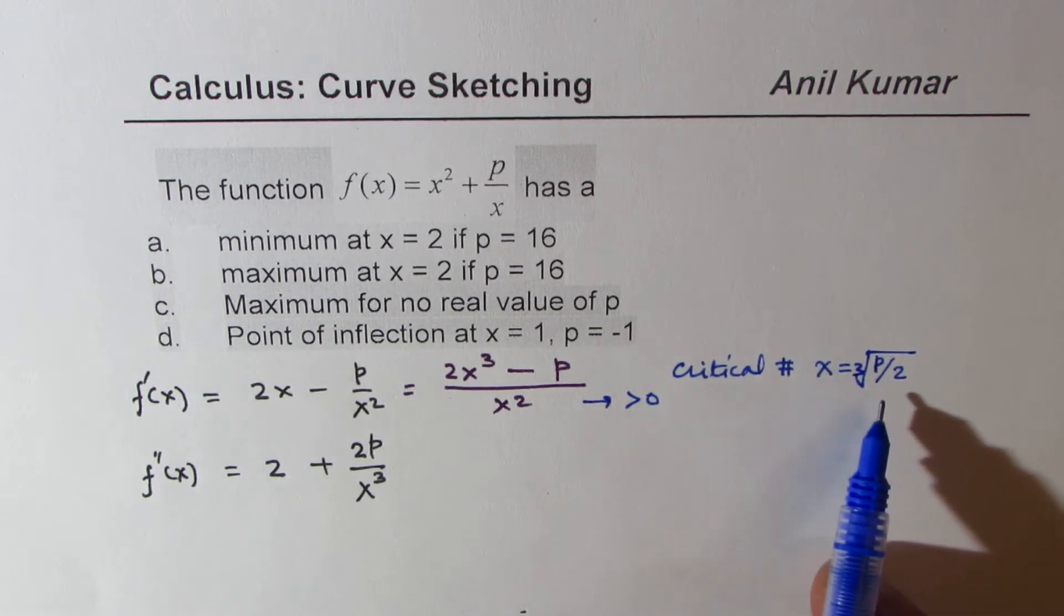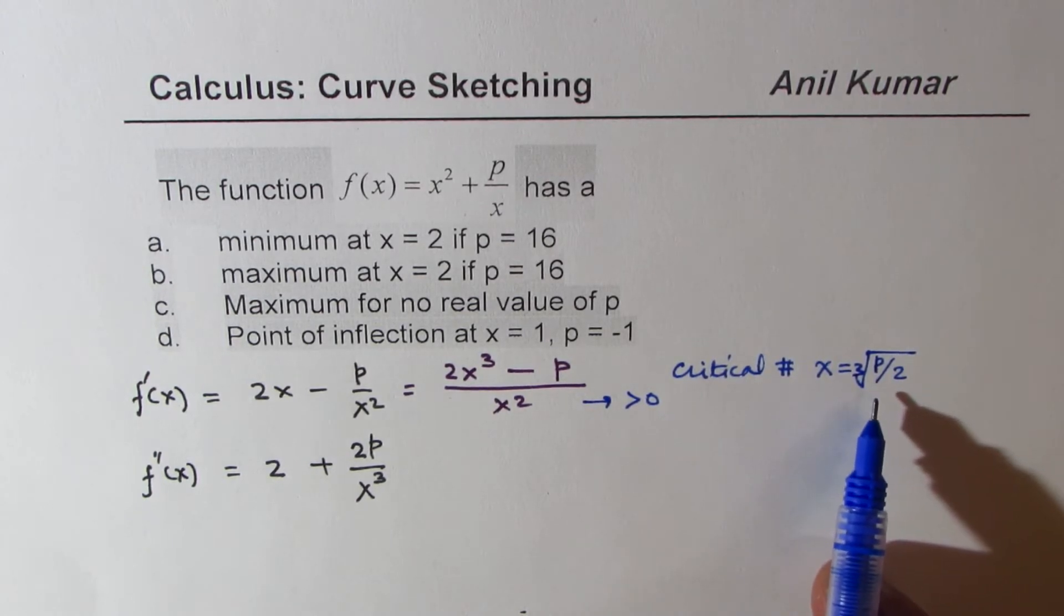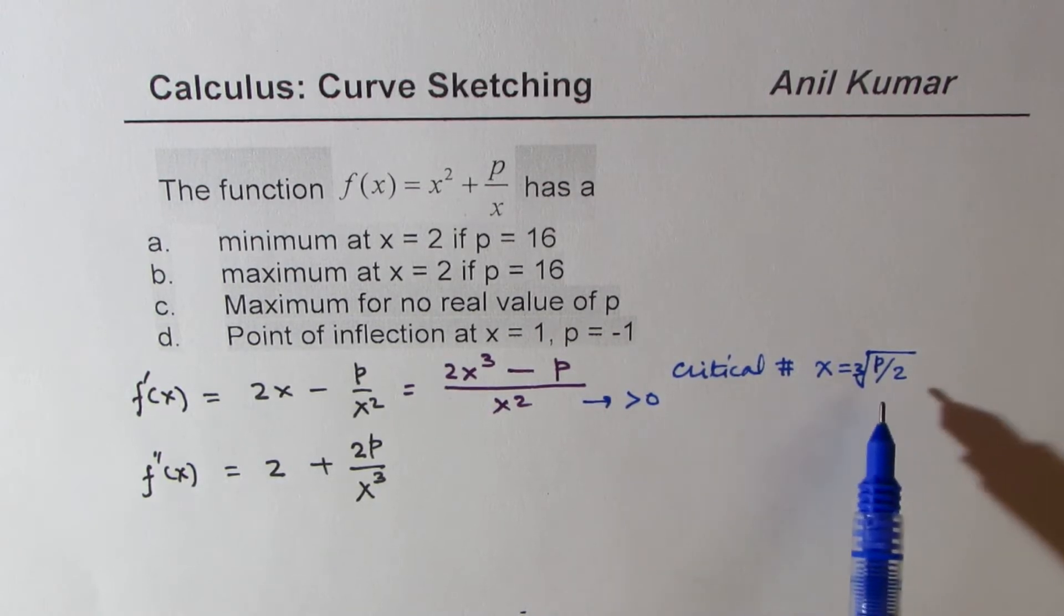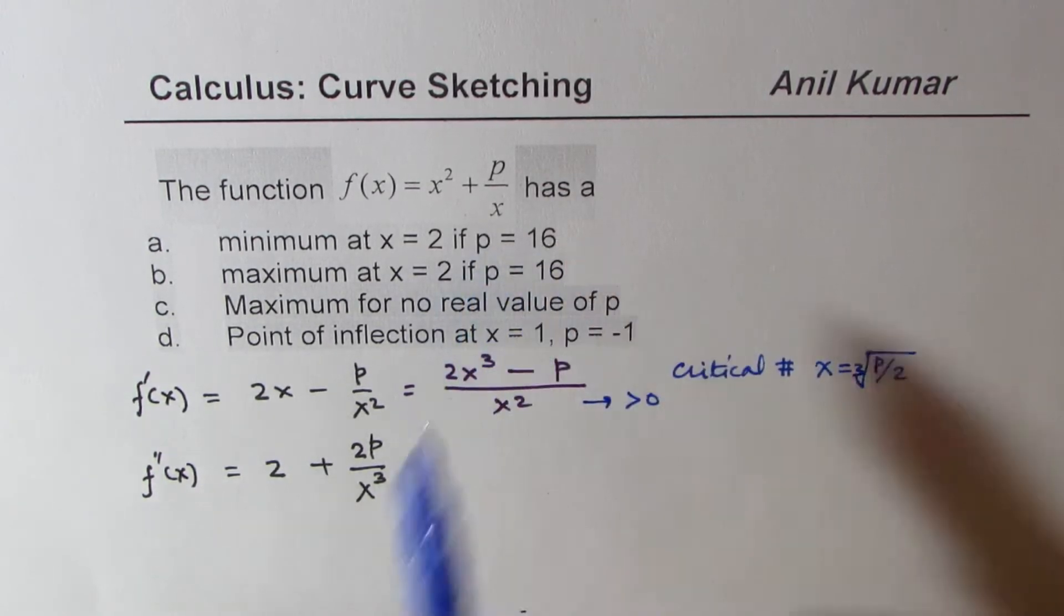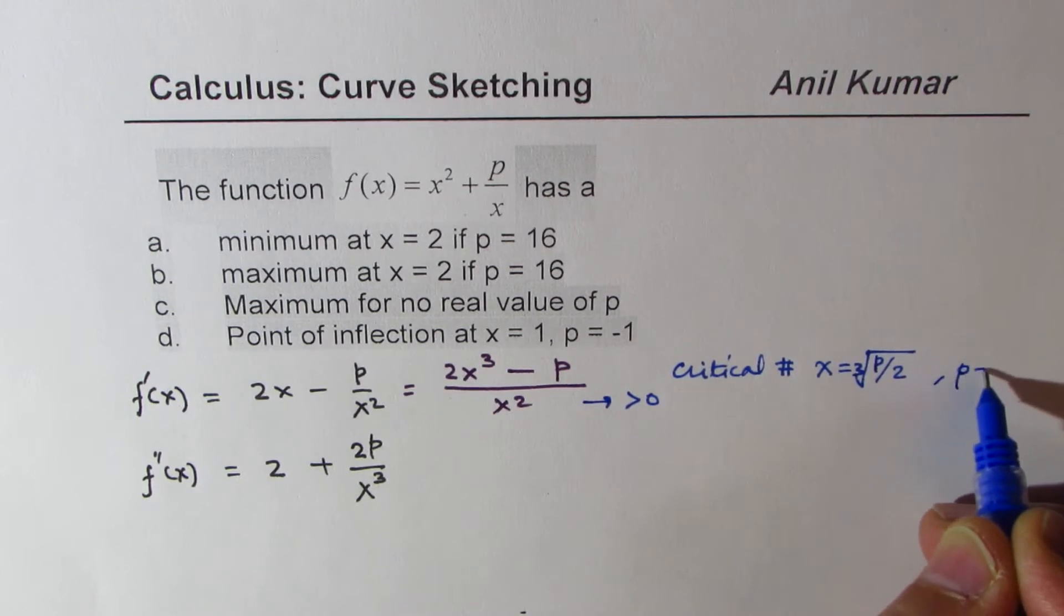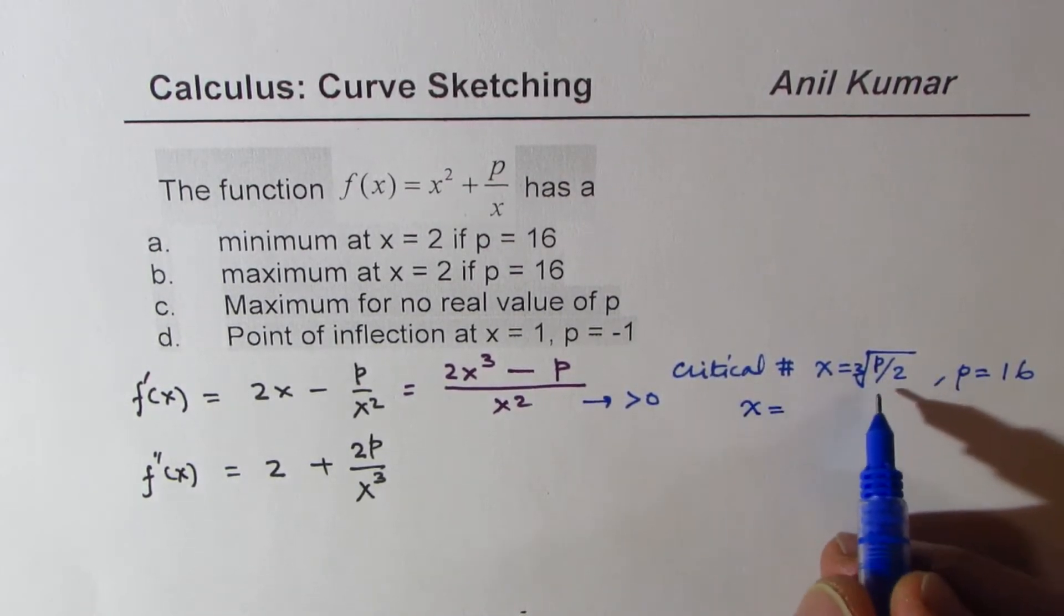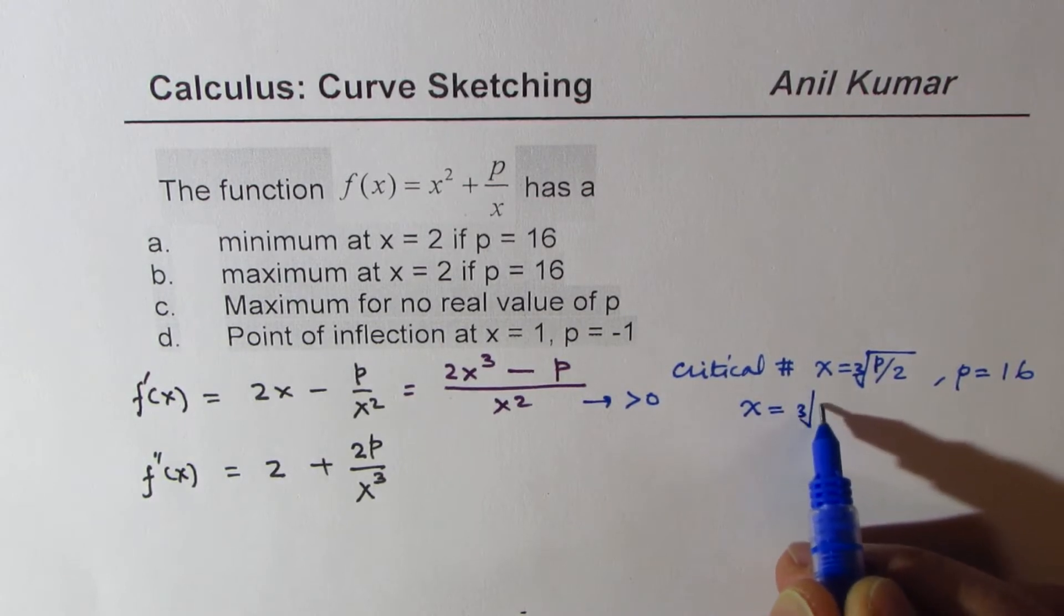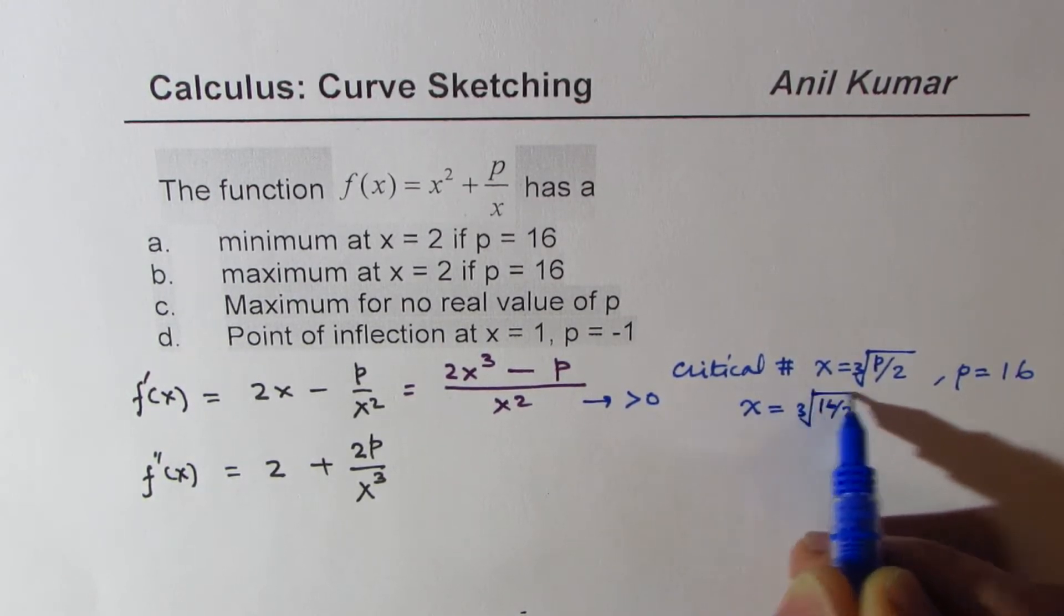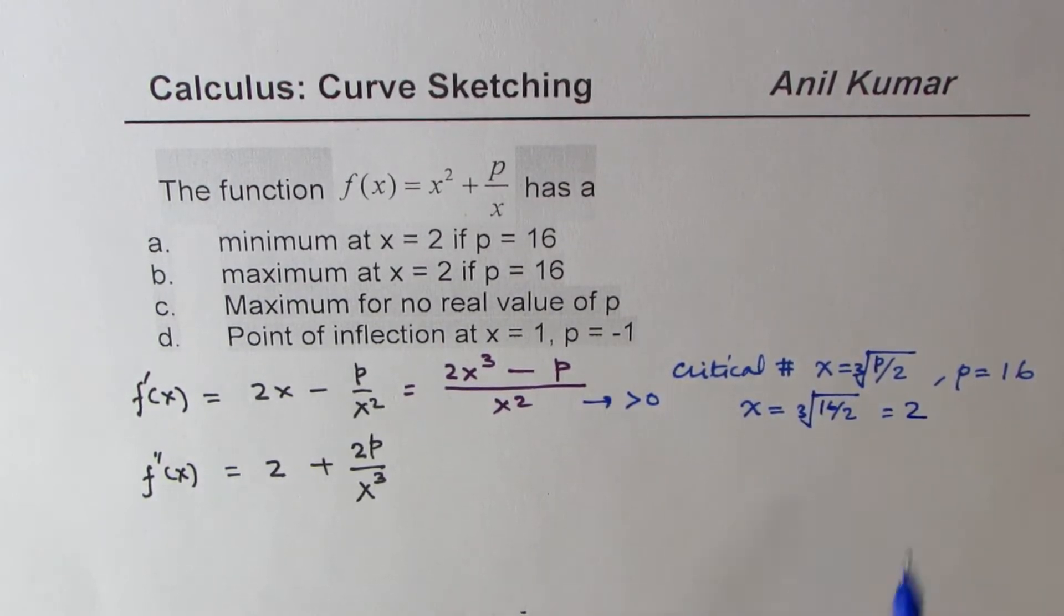So we need to analyze whether this is a maximum or a minimum, right? Or neither. Now, we are given p as equal to 16. So if p equals to 16, in that case, x is equal to cube root of 16 over 2, which is 2. Right? So that is the scenario.